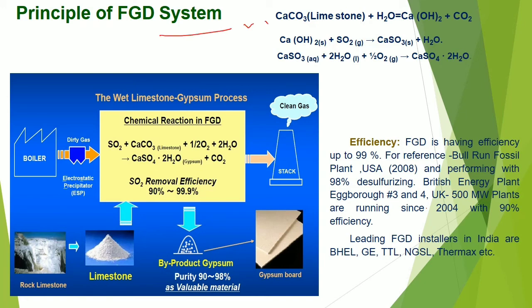The chemical reaction: limestone (calcium carbonate) reacts with water giving calcium hydroxide and carbon dioxide. Calcium hydroxide further traps sulfur dioxide from flue gases making calcium sulfate and water. This calcium sulfate again reacts with water and oxygen giving calcium sulfate 2H₂O, that is gypsum.